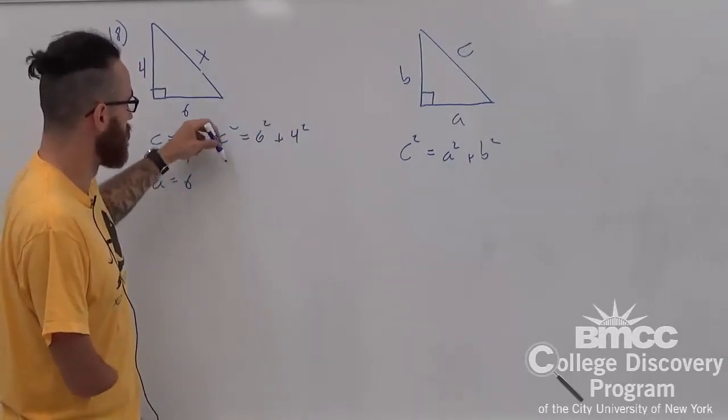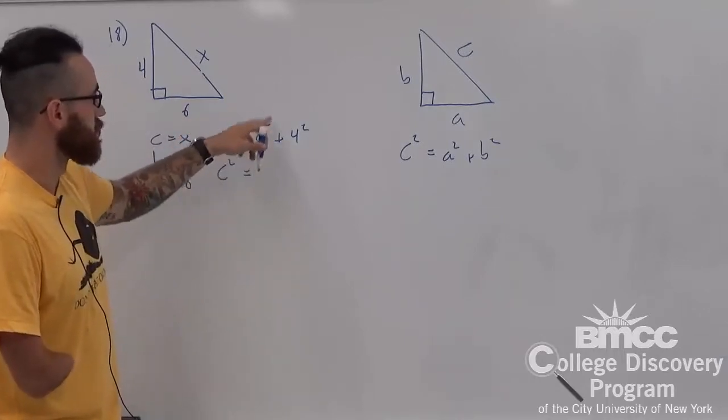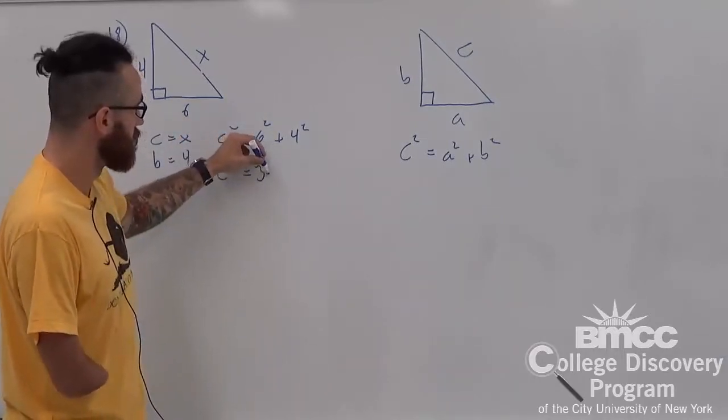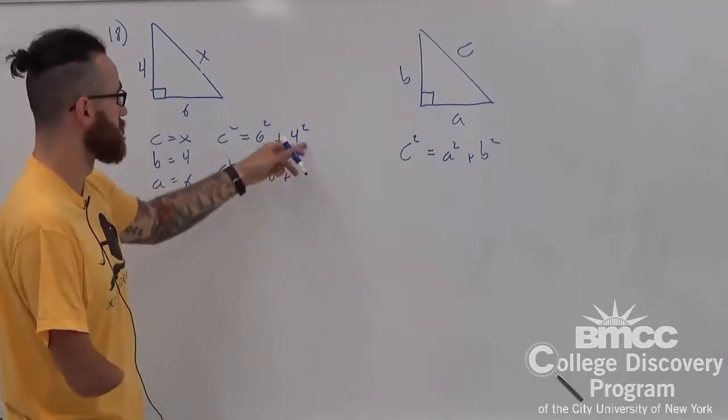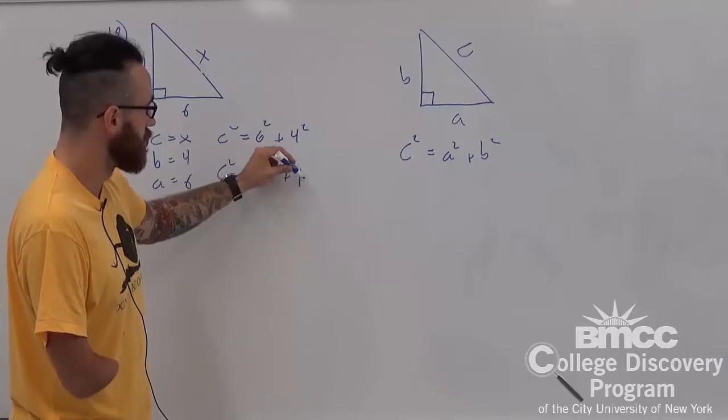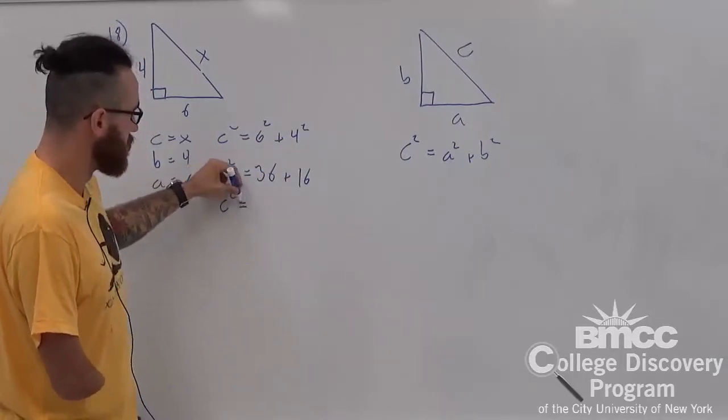So, c squared, or x, stays the same. 6 squared, 6 times 6, is 36, plus 4 squared, 4 times 4, 16. Combine these, equal to 52.